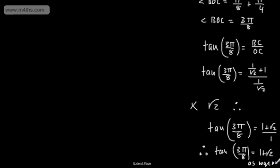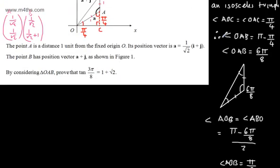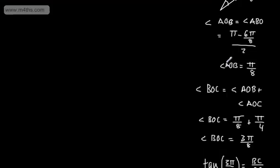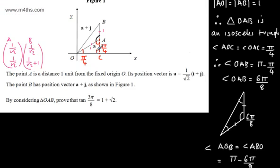That's one way around the problem — certainly not the only way, and I've gone into quite a bit of detail listing all of this out. In terms of marks, you would need to show good communication. Some construction is really quite important to show the angle facts you're using and that the triangle is isosceles.